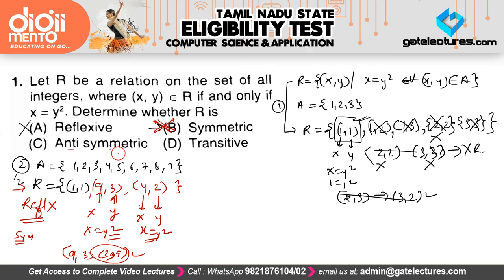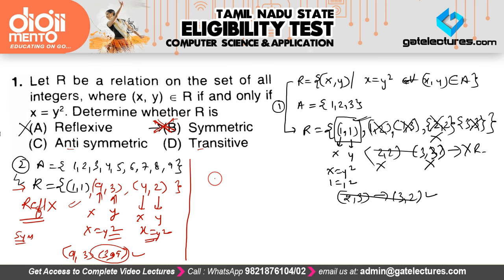Now we need to check whether it is anti-symmetric or transitive. I'll take more examples to clarify. Let's say set A has elements {1, 2, 4, 6, 8, 9, 10, 12, 14, 16}.